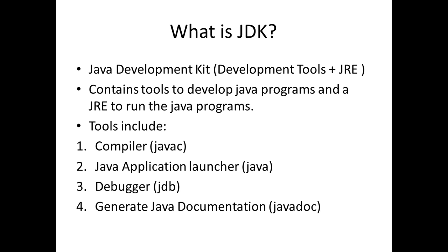The important tools in the JDK include the compiler, invoked by the command javac, which compiles Java source code into bytecode. You also have the Java application launcher to run your programs, the debugger to debug your programs, and a utility called javadoc which is used to generate Java documentation from javadoc tags inserted into the source code.